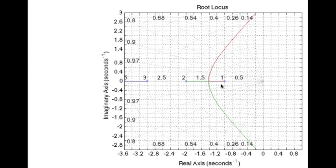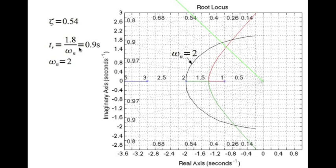Here is the root locus of the plant. The damping constant zeta = 0.454 is the first constraint, so we draw the constant damping line. The second constraint, rise time of 0.9 seconds, gives omega_n = 2. The circle of omega_n = 2 and the damping line intersect at the desired closed-loop pole location sd = -1.1 + 1.7i.